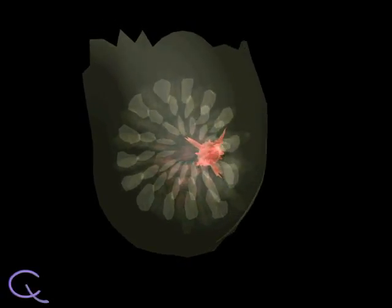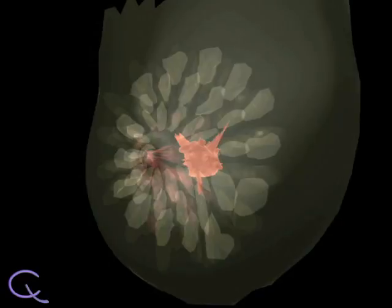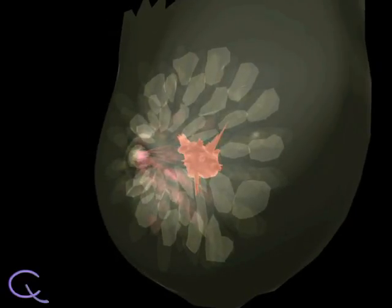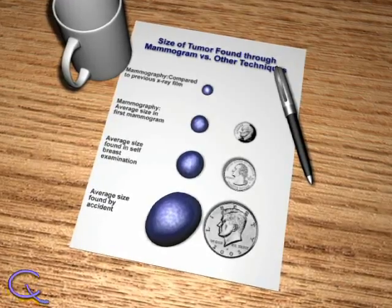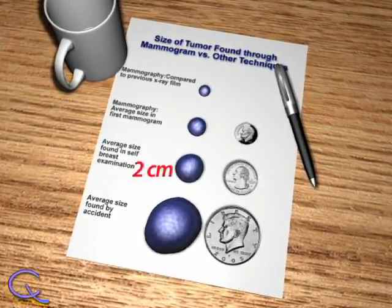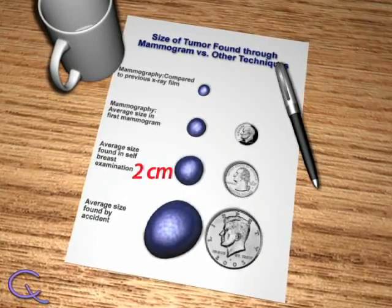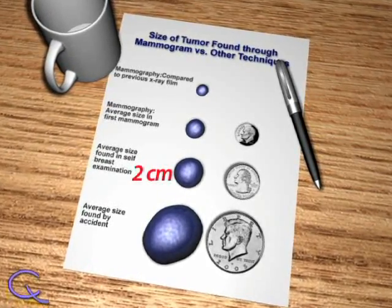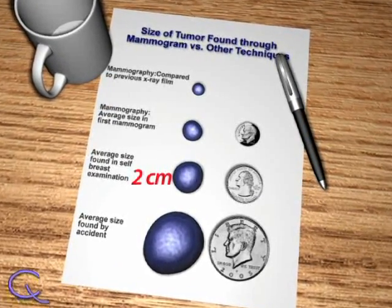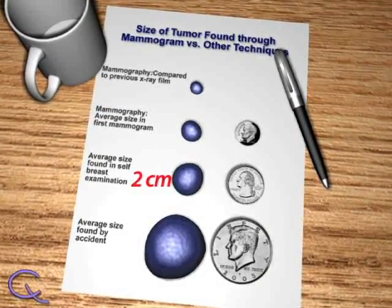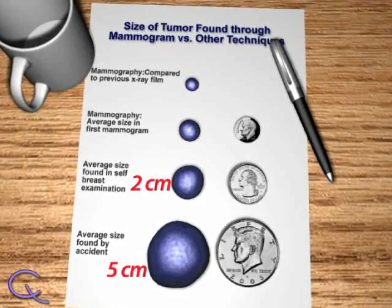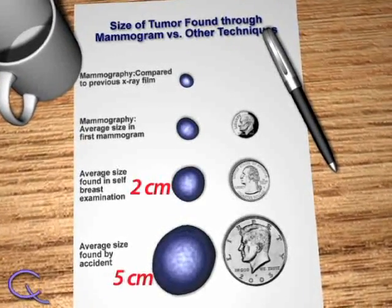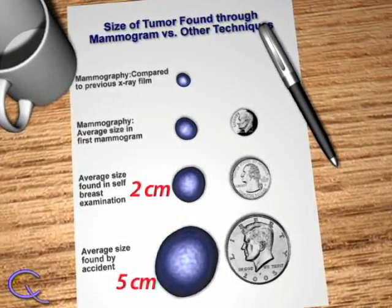Tumor size is an important indicator of five-year survival rates in breast cancer. Patients with tumors less than or equal to two centimeters have a 92 percent survival rate, but for those with tumors greater than five centimeters, survival rates drop to 65 percent.